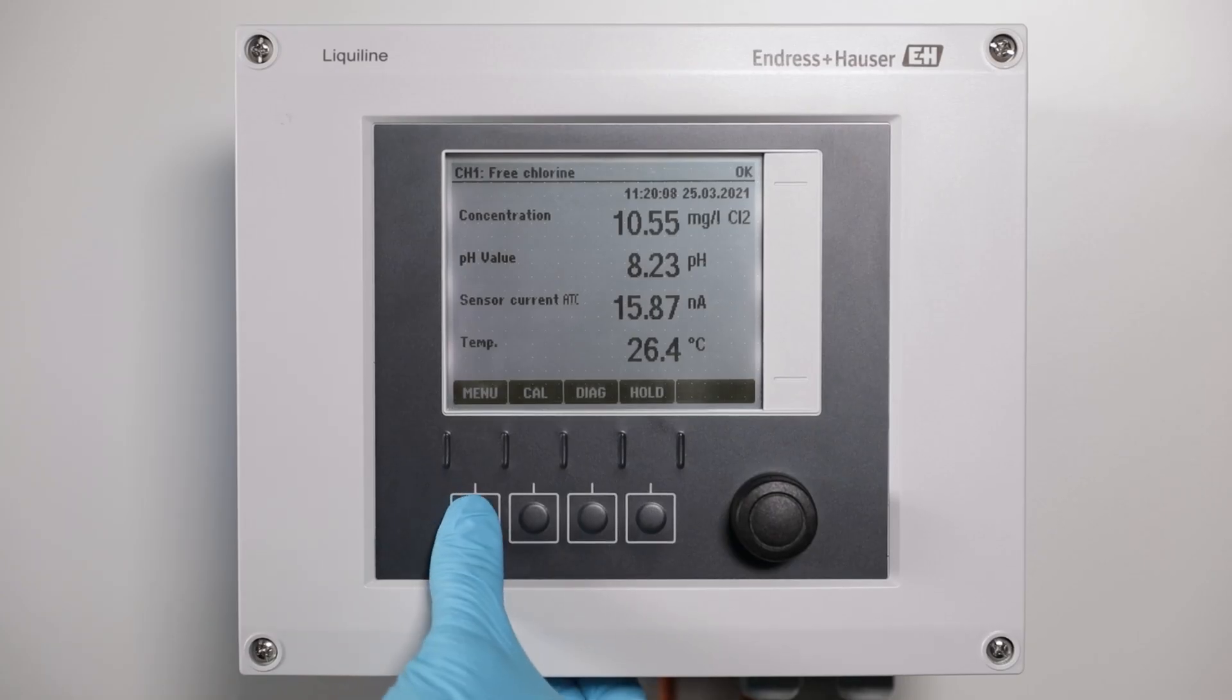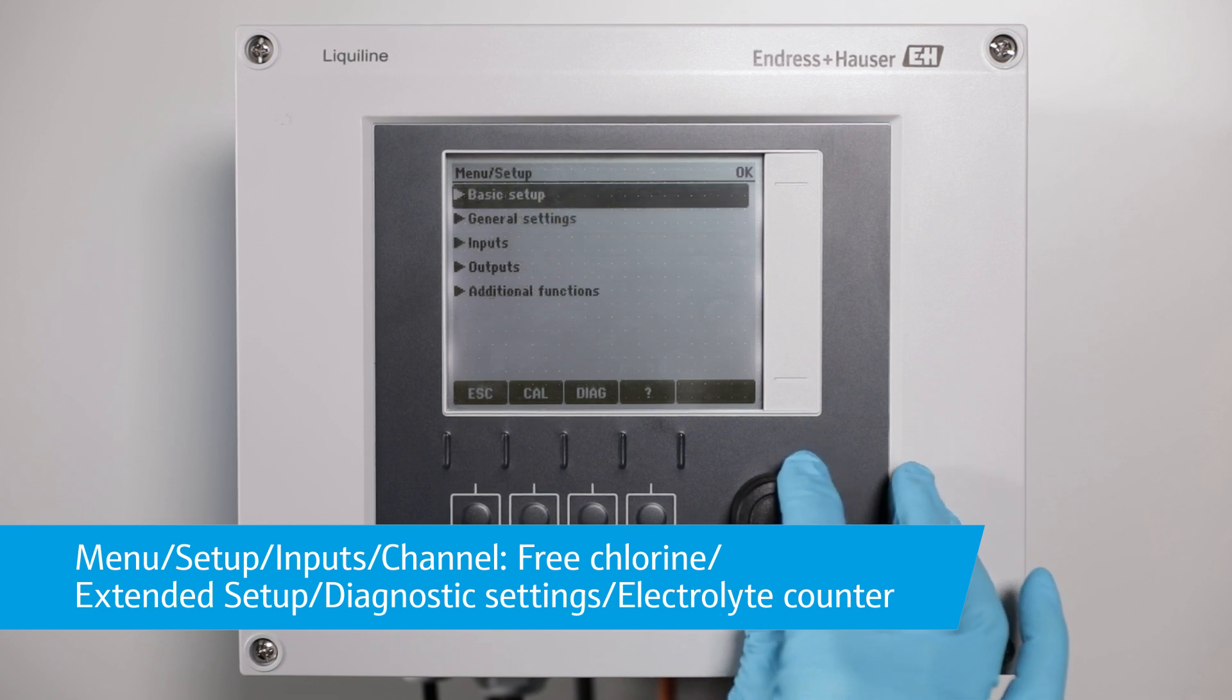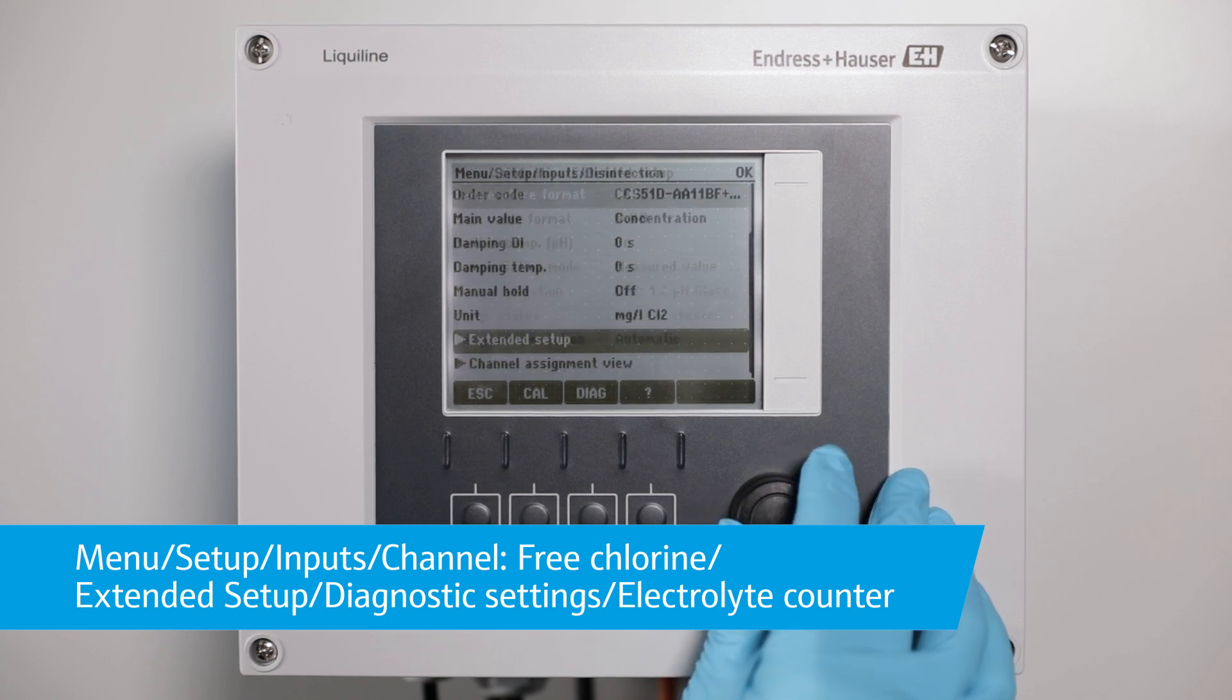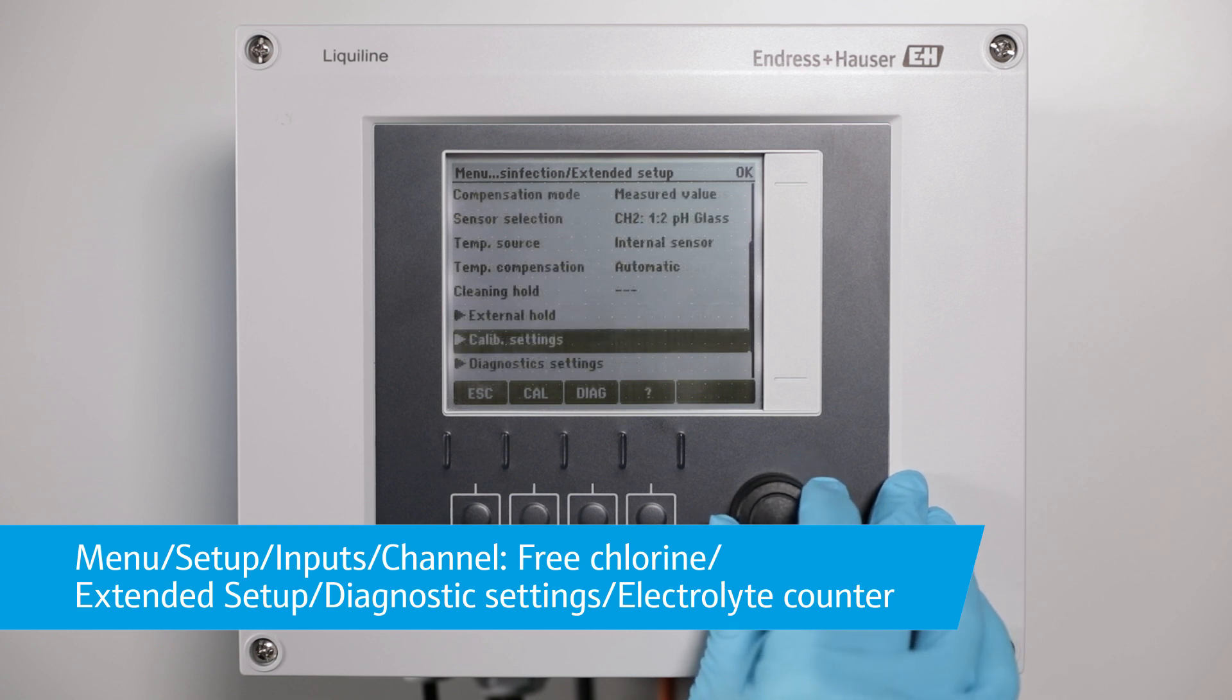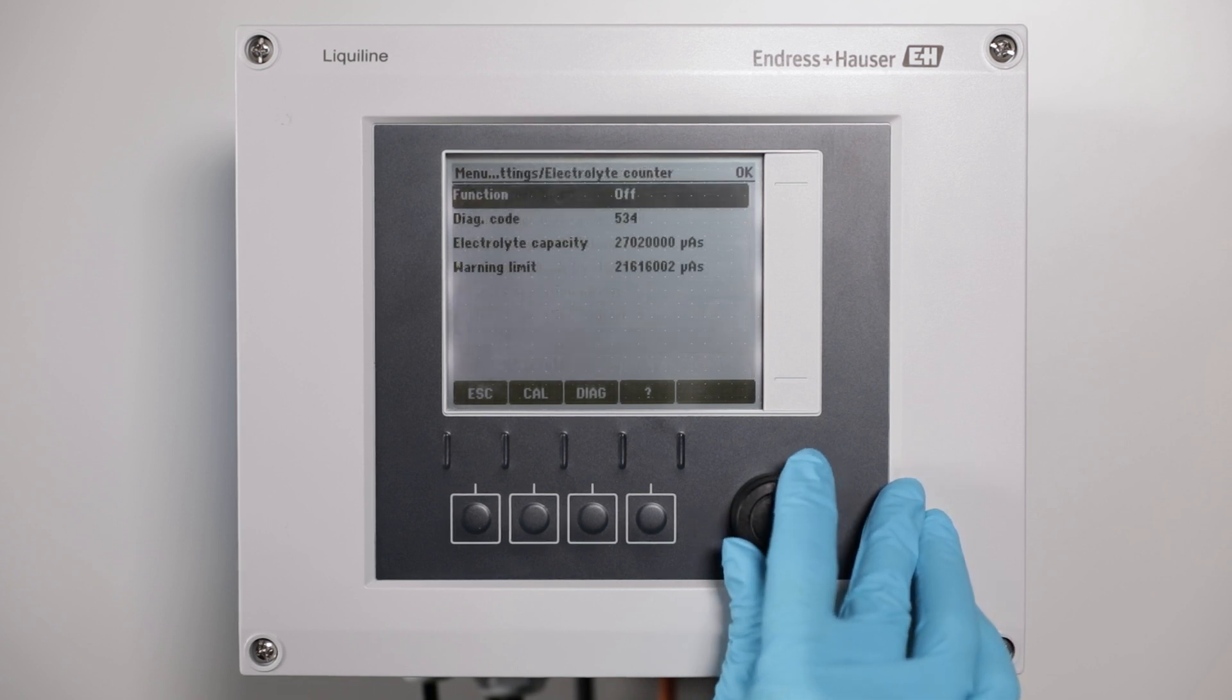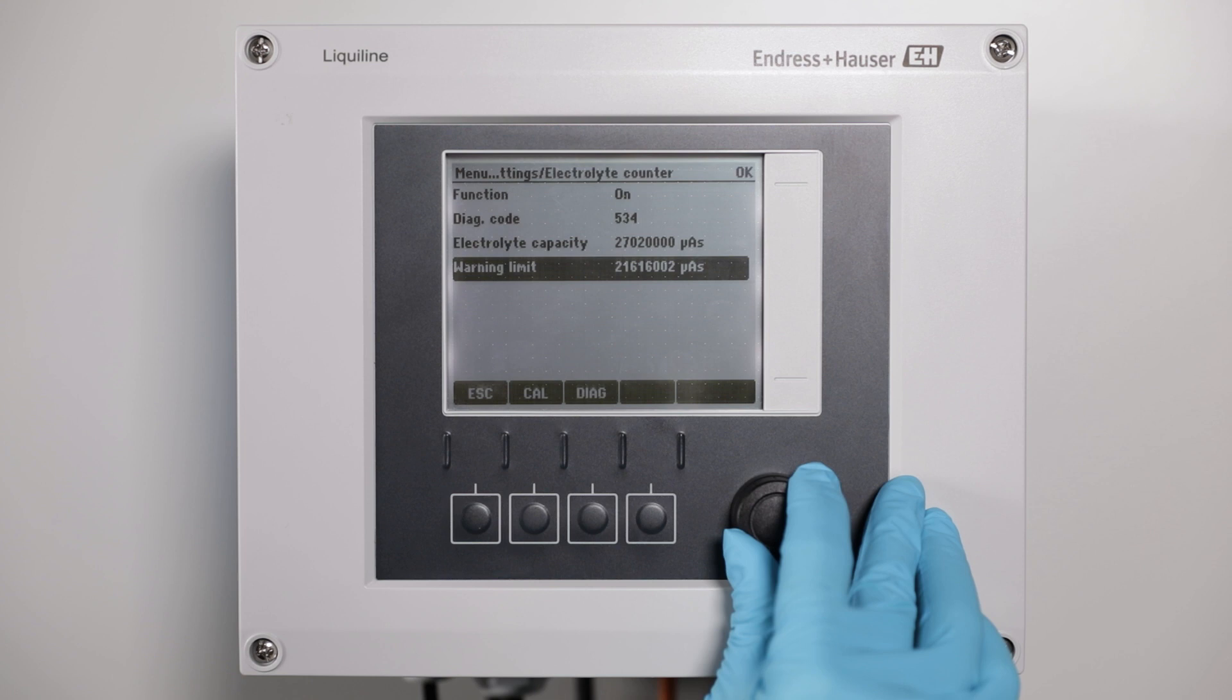To enable the electrolyte counter, please go to Menu Setup Inputs, choose the free chlorine channel and go to Extended Setup and enter the diagnostic settings. Scroll down to Electrolyte Counter. Activate its function and set the required warning limit according to your individual predictive maintenance planning.